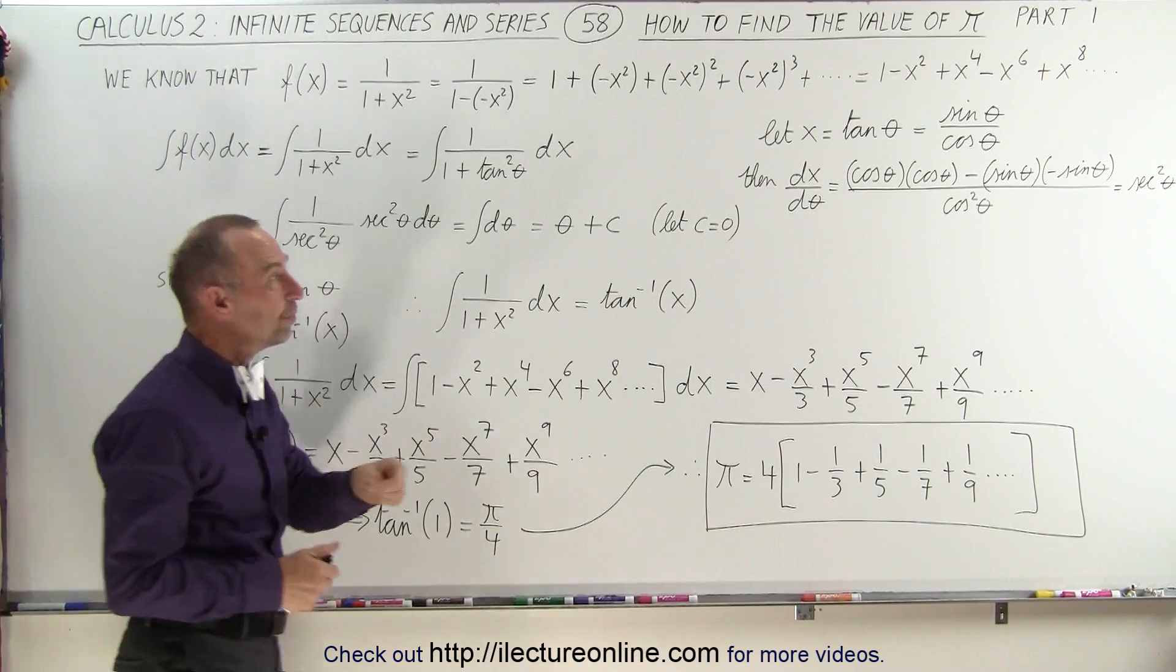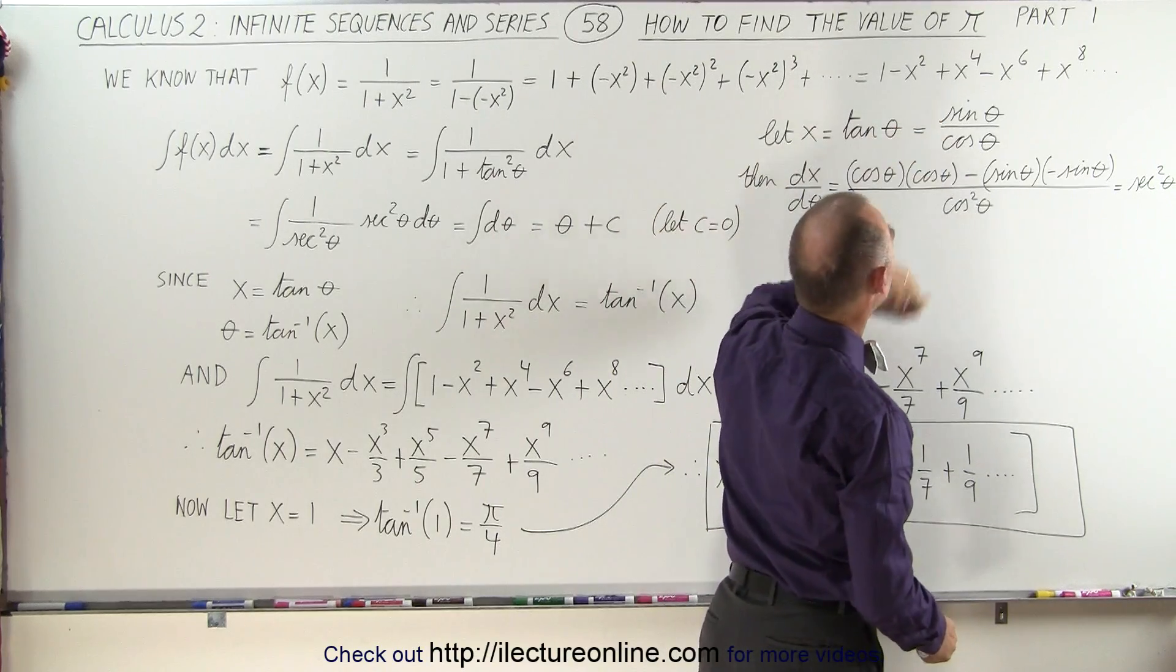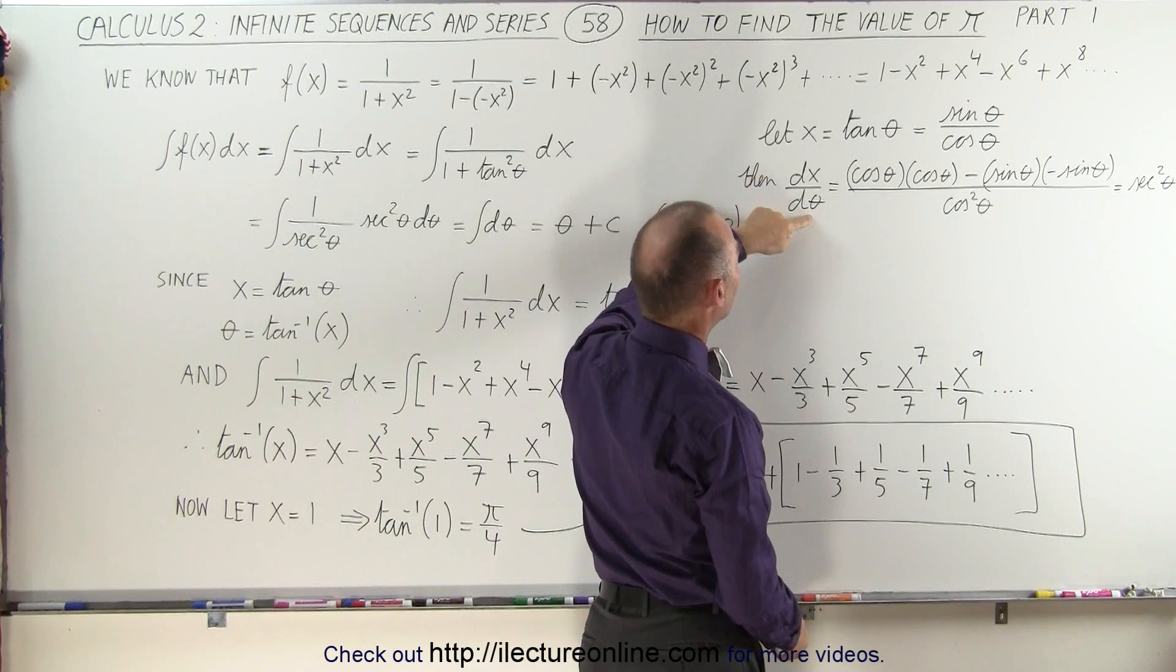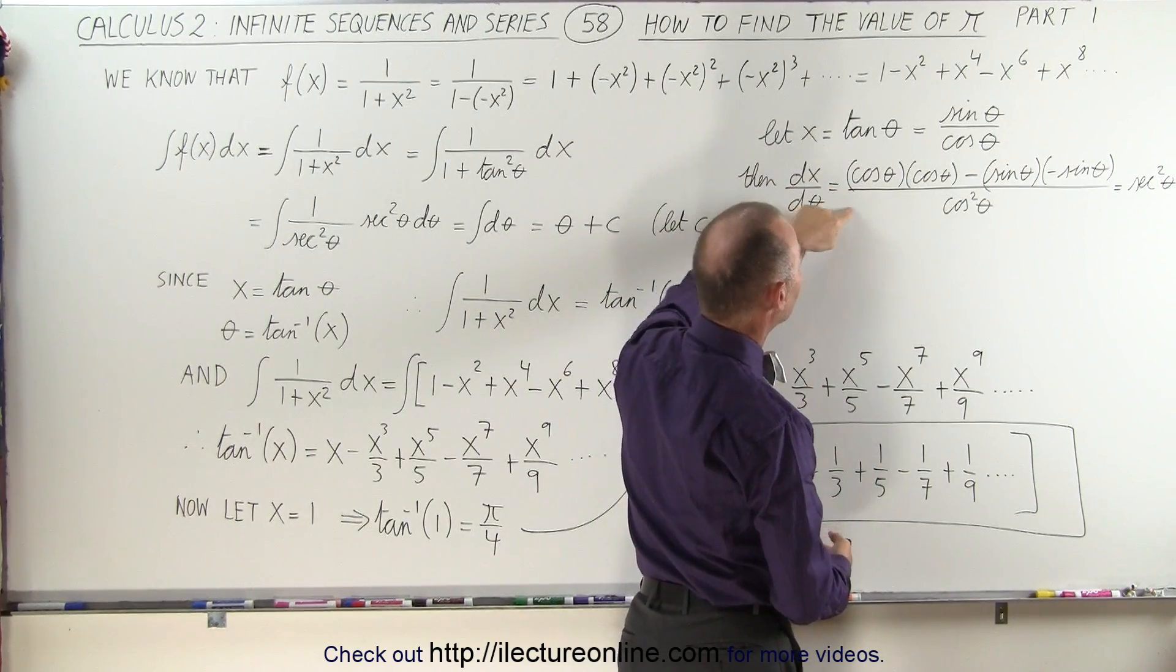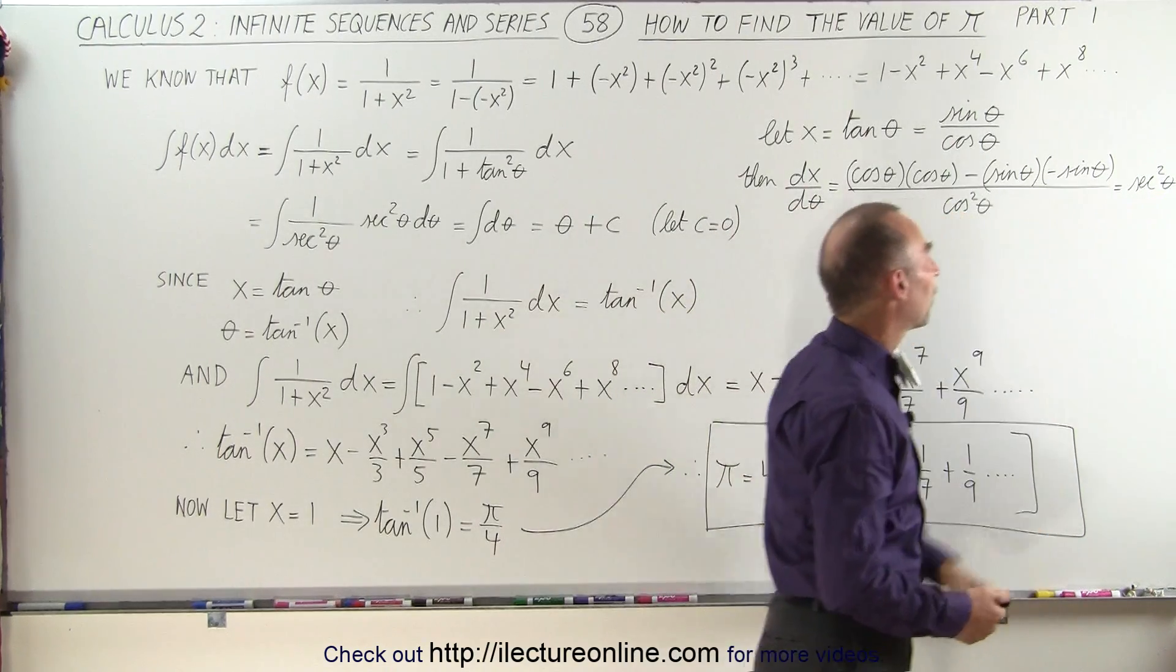We can use a substitution. Let x equal the tangent of theta, which is sine divided by cosine. Then if we take the derivative of x with respect to theta, the derivative of tangent of theta with respect to theta, we can use the quotient rule and we end up with the secant squared of theta.